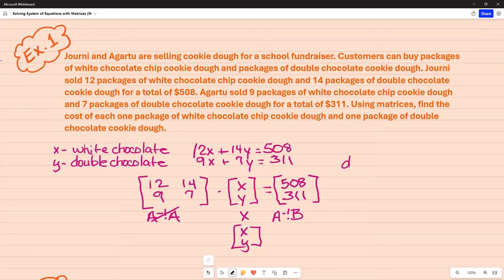I need the determinant in order to do the A inverse. So I see for determinant of A, what I'm going to have to do is multiply diagonally the 12 and the 7, and that's going to give me 84, subtract it from the other diagonal, which is 9 times 14, and that's going to give me 126. So 84 minus 126 is negative 42.